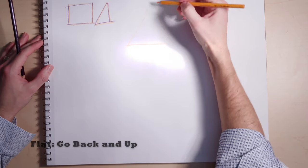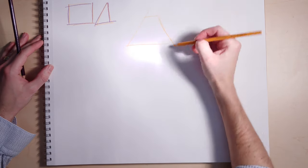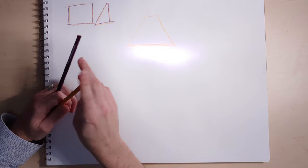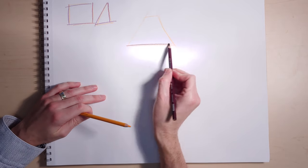So the first one is to go back and up, and the way you're gonna do this is create two horizontal lines and draw a big triangle with the point at the top.